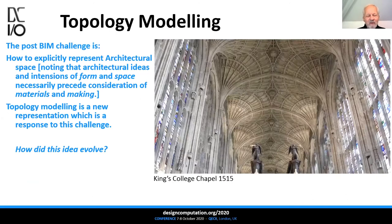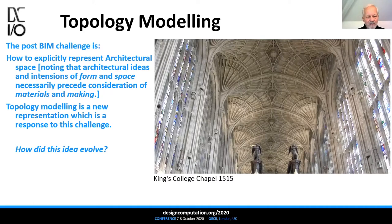Even my colleagues who were working with me on RU-CAPs in the 1980s — some of us realized that this was not the complete answer. So there's a post-BIM challenge that always existed, even back then: we need to have a more explicit representation of architectural space. However interested we are in materials and making, the intentions of form and space necessarily precede considerations of material and making — yet this needs to be helped along with a proper representation.